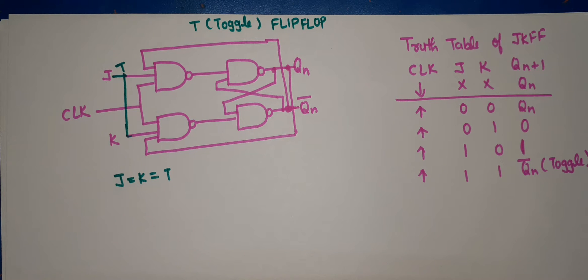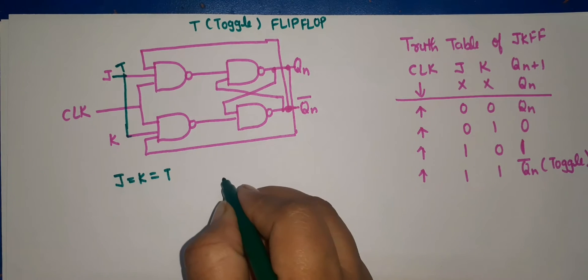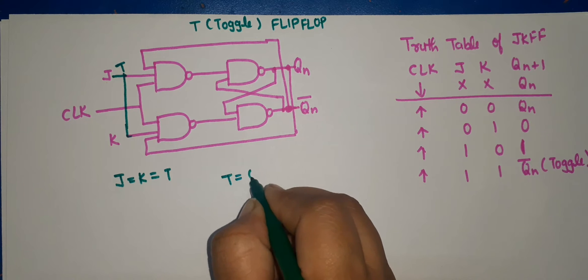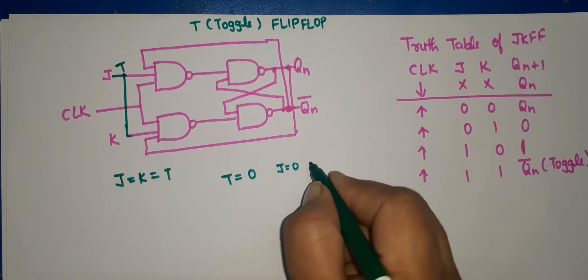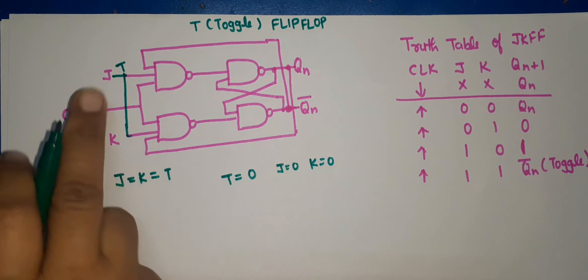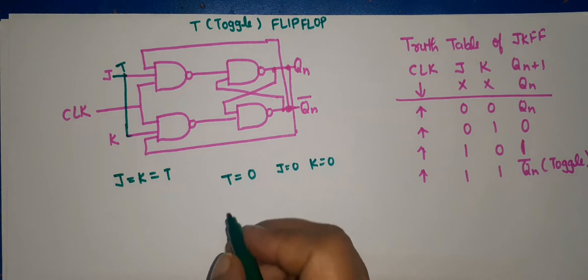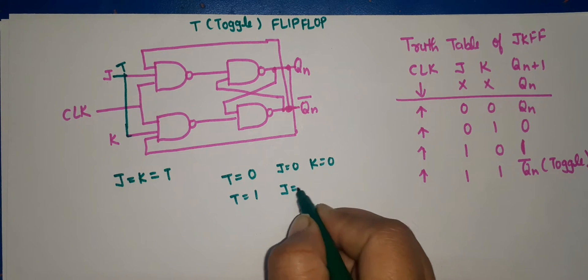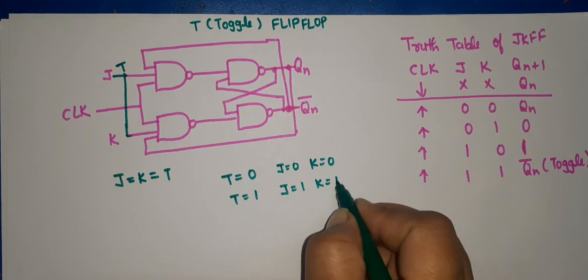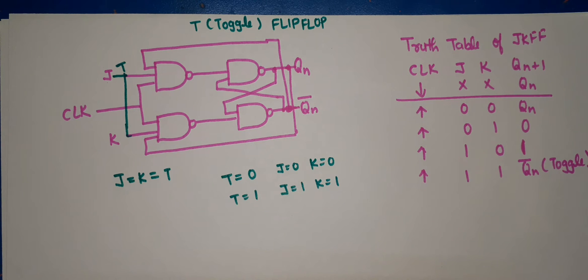If T is equal to 0, J and K both will be 0. If T is equal to 1, J and K both will be 1. Because we have shorted both of them, when T is 0, J will be 0 and K will be 0. When T is 1, J is equal to 1 and K will be 1. These are our inputs.